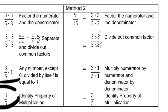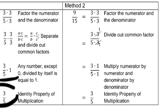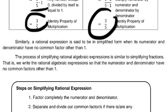Method number 2: We factor 9 as 3 times 3 and 15 as 5 times 3, then divide out or cancel out the common factor of 3. The 3 becomes 1 in both numerator and denominator, giving 3 times 1 over 5 times 1, which equals 3 over 5. Similarly, a rational expression is in simplified form when its numerator and denominator have no common factor other than 1. The process of simplifying rational algebraic expressions is similar to simplifying fractions — we write the expression so the numerator and denominator have no common factors other than 1.